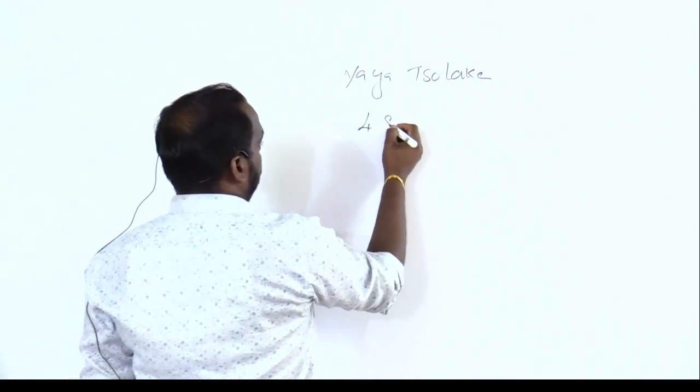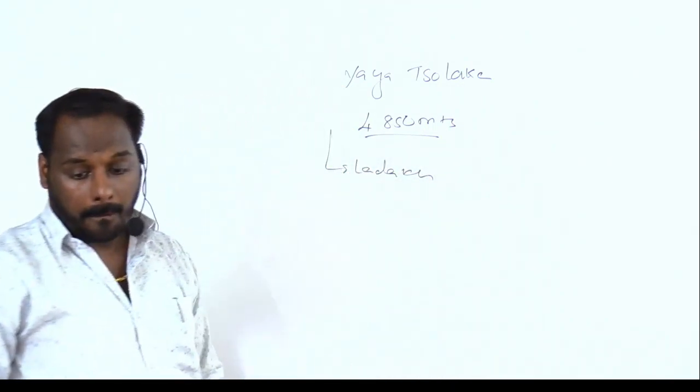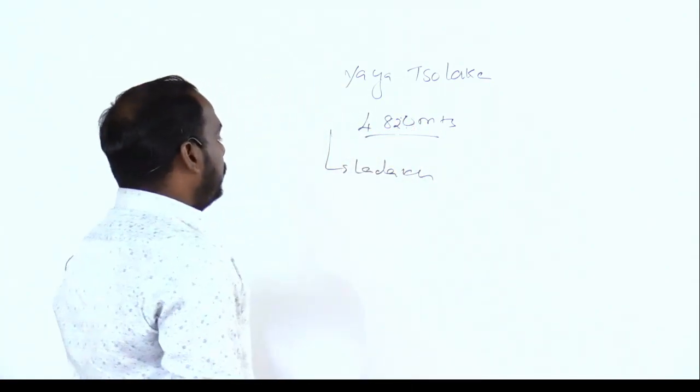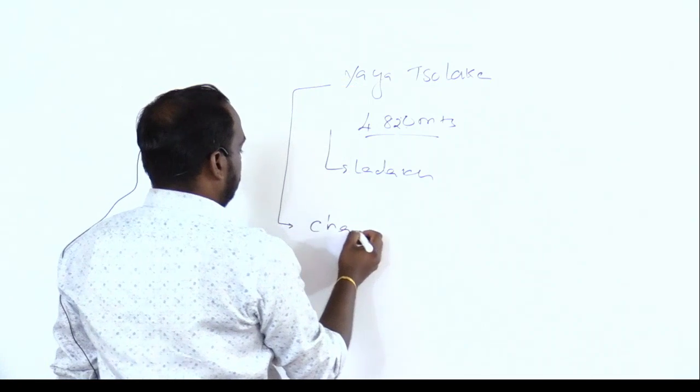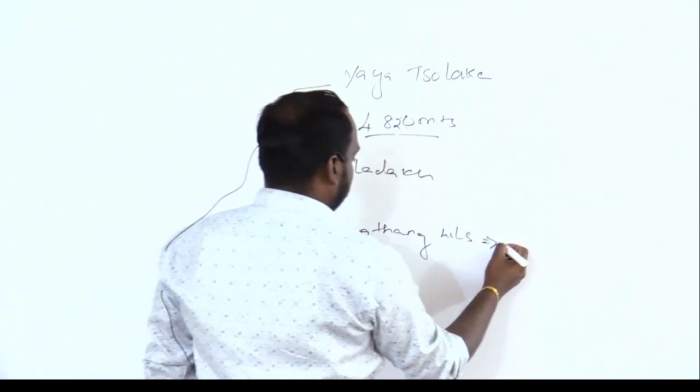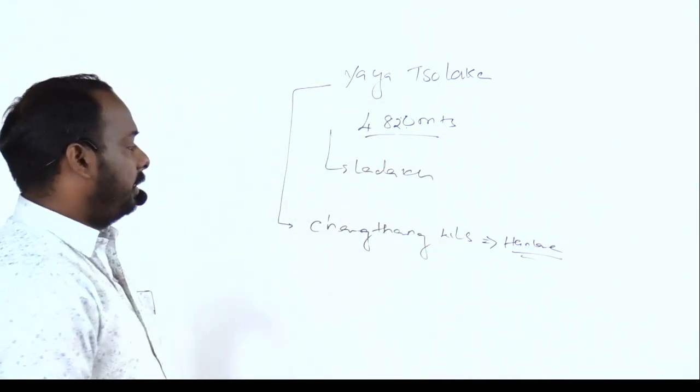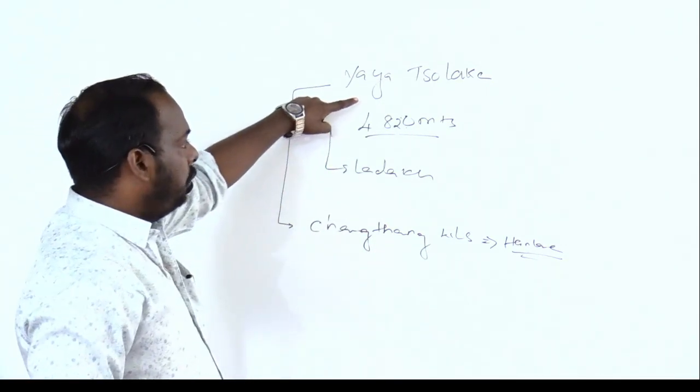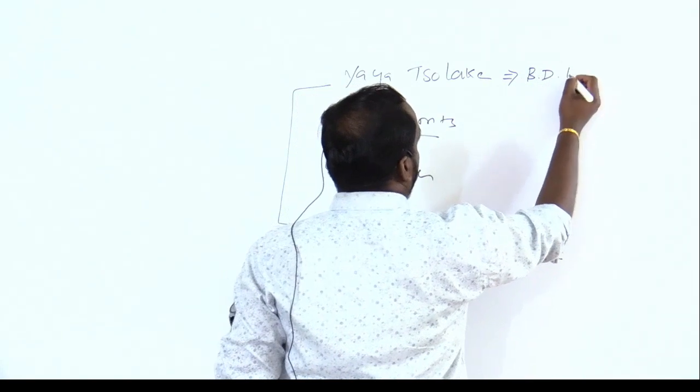It is about 4850 meters in Ladakh area. Recently we discussed about the Changtang Wildlife Sanctuary in Hanle. The Yaya Sho Lake and Hanle Observatory - the reason I discussed this is related, and Yaya Sho Lake was listed as a biodiversity heritage site.